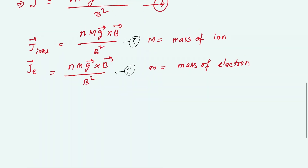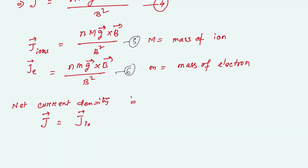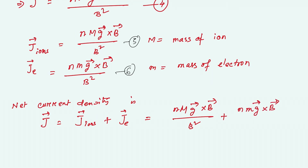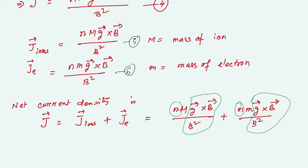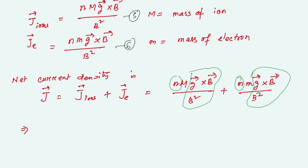Net current density J = J_ions + J_electrons = nMg×B/B² + nmg×B/B². Taking the common factor, this gives: J = n(M + m) × g×B / B². This is the expression for the net current density.